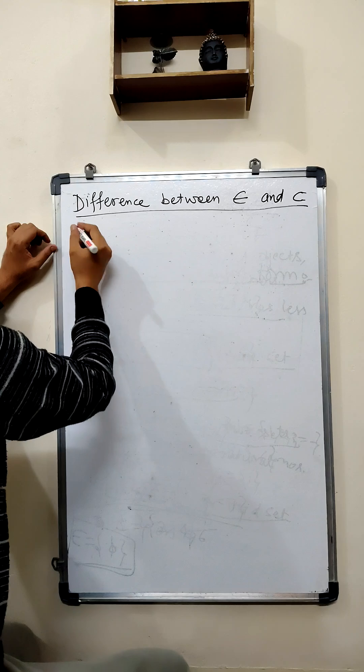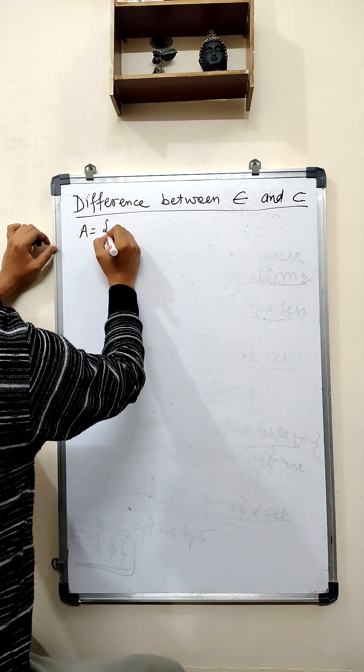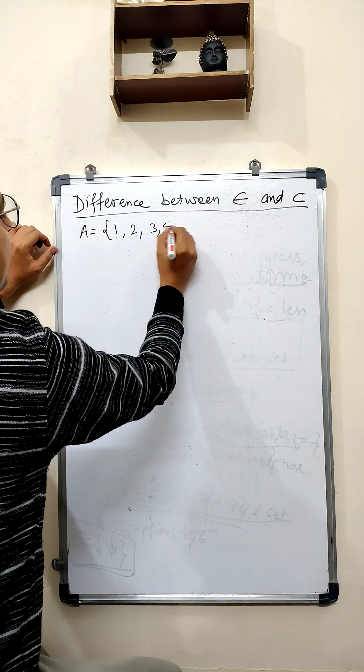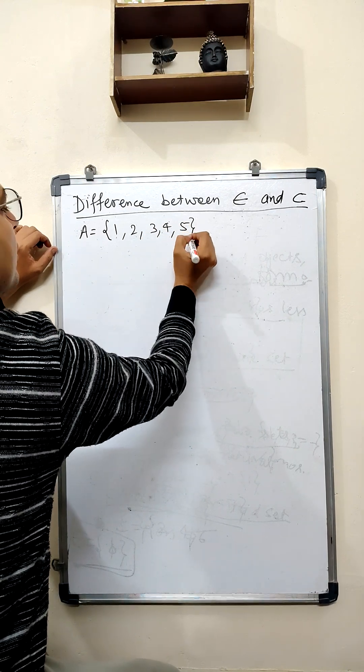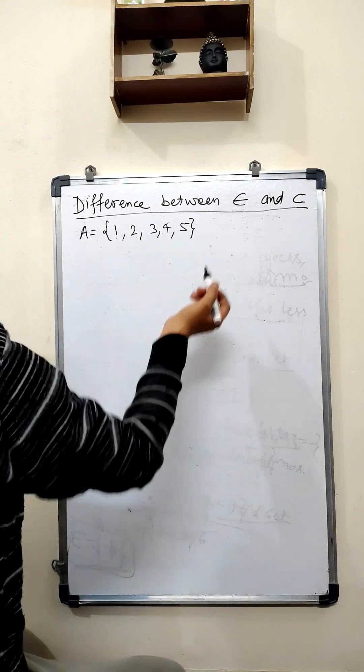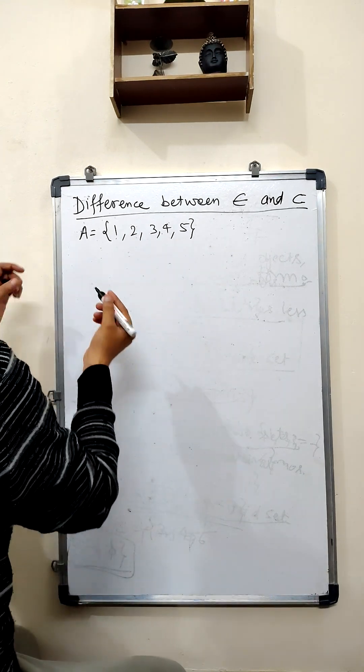Let us consider a set, suppose A is a set which contains 1, 2, 3, 4, 5. So, as we can see that 1, 2, 3, 4, and 5 are the elements of set A.